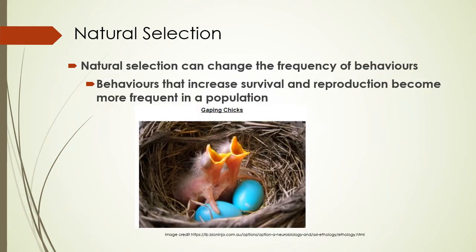Natural selection is going to change the frequency of behaviors, just like it changes the frequency of physical traits. Behaviors that increase survival and reproduction are going to become more frequent in a population. Baby birds do this thing where they open their beaks and yell really loudly — this leads to parents feeding them, being fed increases their chances of survival, and so baby birds have learned to do this. These birds grow up, lay their own eggs, and their babies do the same exact thing because again, it increases survival.